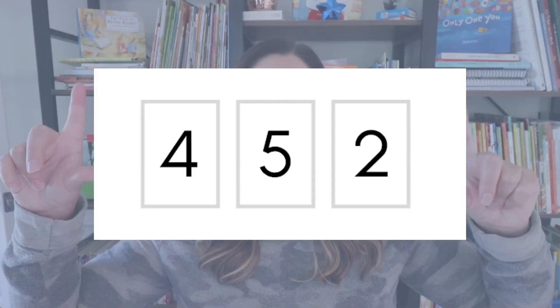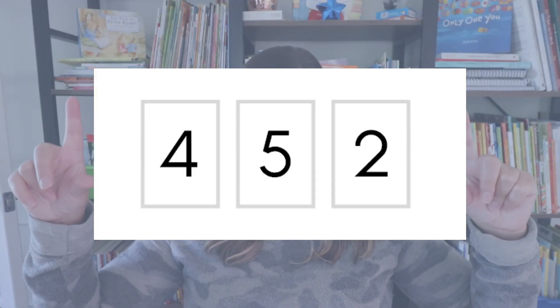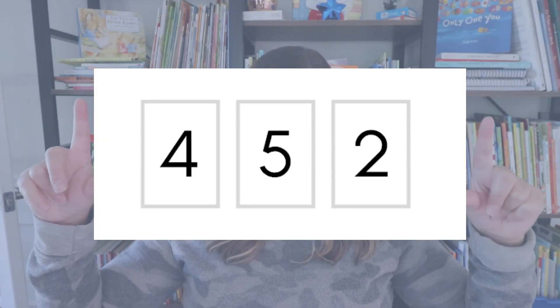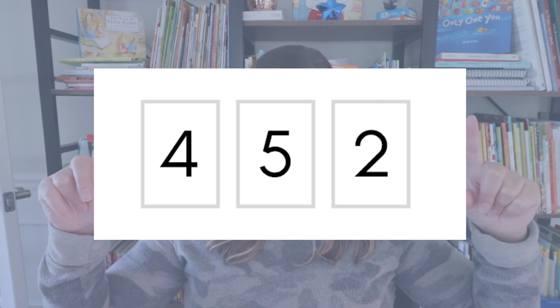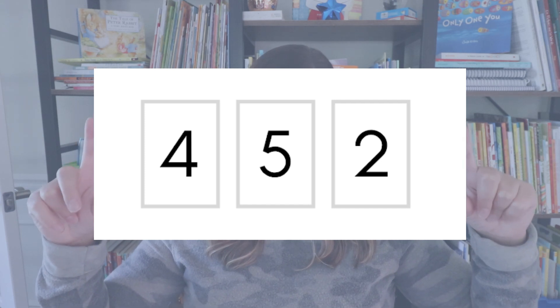You may have a student who uses a friendly number to solve. In this problem with 4, 5, and 2, a student might say: I know 5 plus 5 equals 10, so 5 plus 4 must equal 9, and then plus 2 more is 11. Here the student realized that 5 plus 5 equals 10, but because that one is a 4 we need to take one away. Students might also use doubles plus one facts — for example, I know 4 plus 4 is 8, so 4 plus 5 must equal 9.